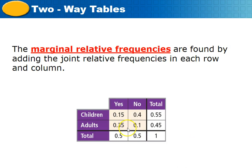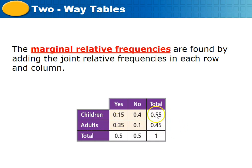That's how we get the table values: 0.15, 0.40, 0.35, and 0.10. Marginal relative frequencies are found by adding the joint relative frequencies in each row and column. The marginal relative frequency of 'yes' responses is 0.5, and 'no' responses is 0.5. The marginal relative frequencies for children are 55% and adults 45%. Notice 0.5 plus 0.5 equals 1, and 0.55 plus 0.45 also equals 1. If not, there's an error in the table.